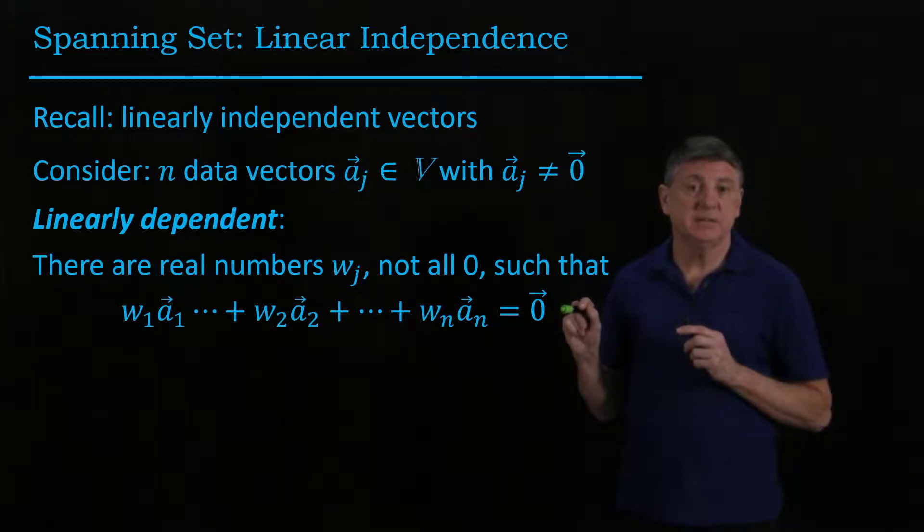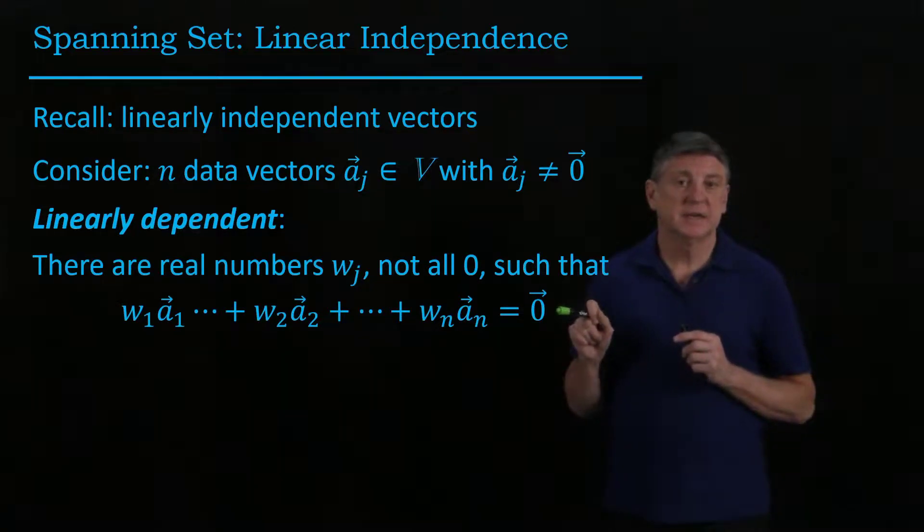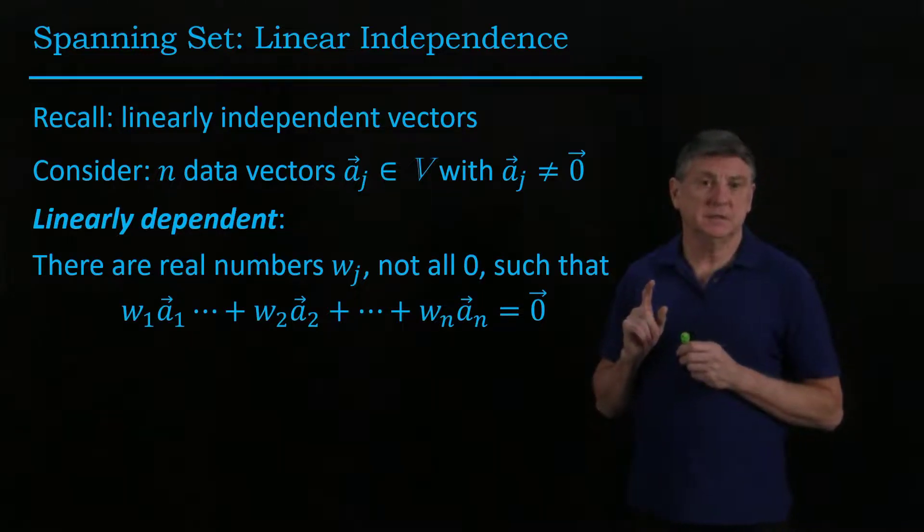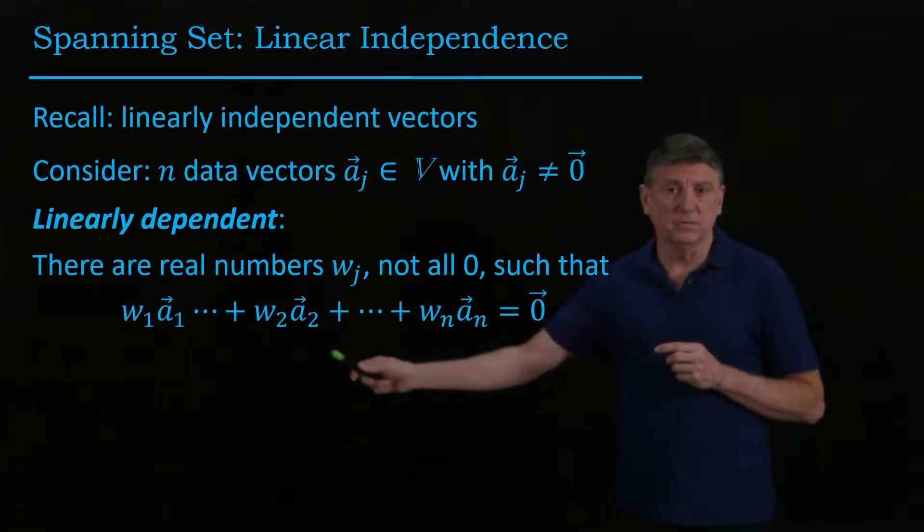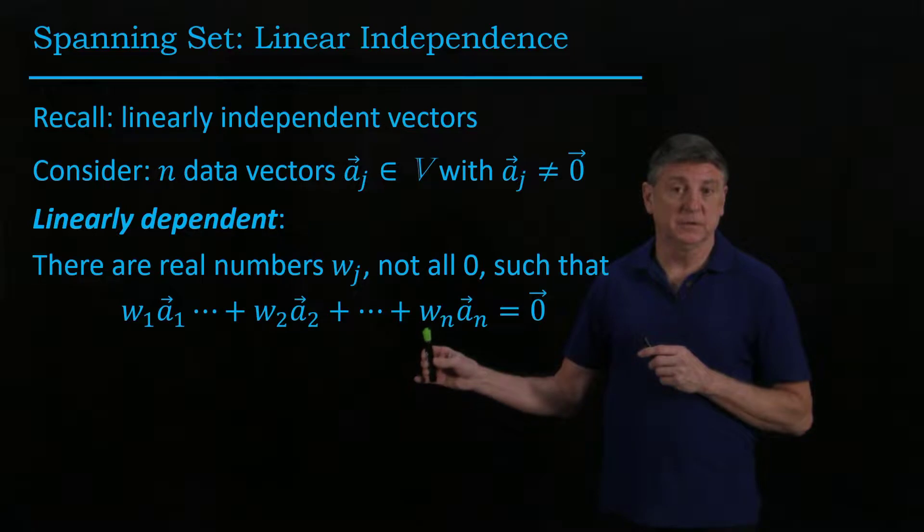such that we can create the zero vector from those vectors. That's what linearly dependent means. If all vectors are non-zero, at least one coefficient w must be non-zero. Suppose it's w_n.